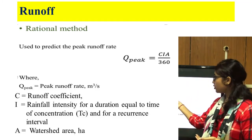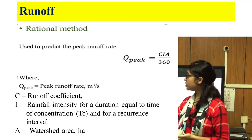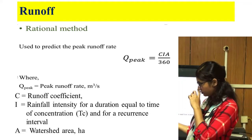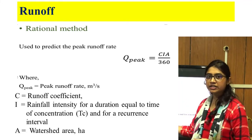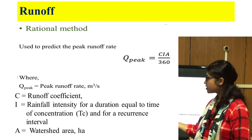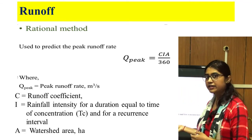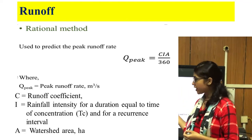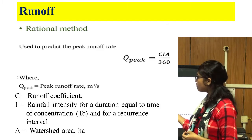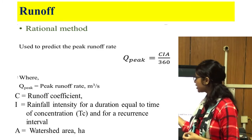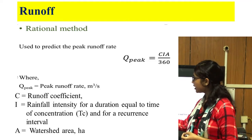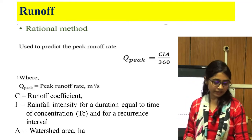The rational method formula is: Q_peak = CIA / 360, where Q_peak is the peak runoff rate in cubic meters per second, C is the runoff coefficient, I is the rainfall intensity for a duration equal to the time of concentration and for a recurrence interval in mm per hour, and A is the watershed area in hectares.